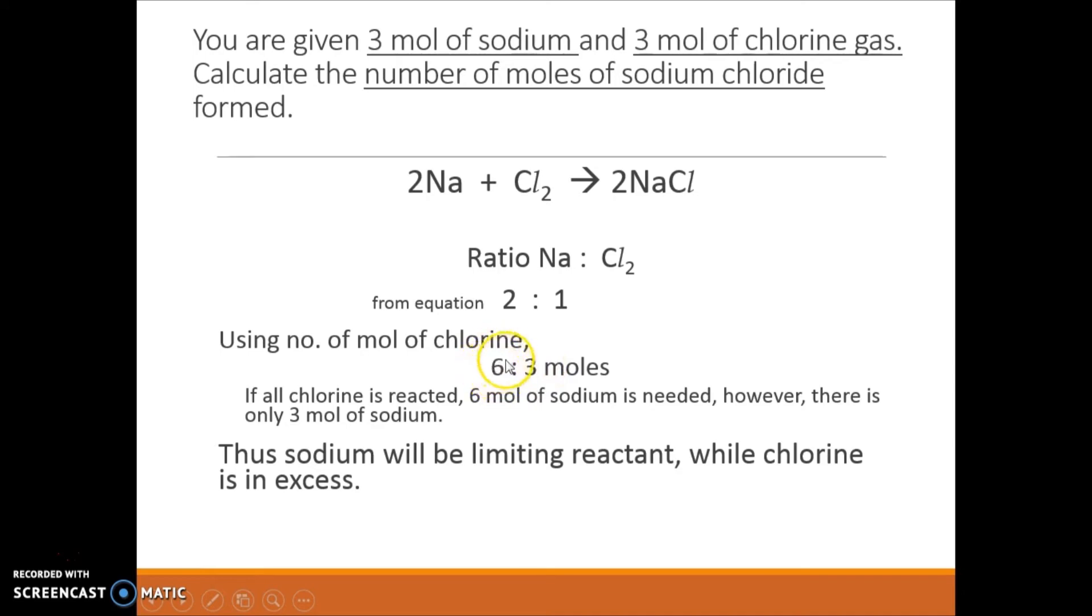If all 3 moles of chlorine is reacted, 6 moles of sodium is needed. However, there is only 3 moles of sodium given. So what can I say about this? That there isn't enough sodium for this complete reaction. As such, I will conclude that sodium will be the limiting reactant while chlorine is still in excess.